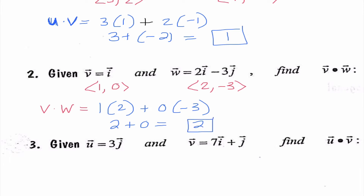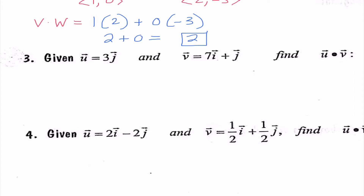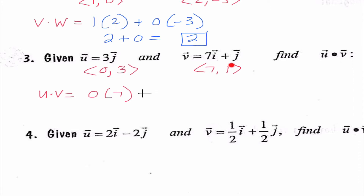Hopefully we're seeing this is pretty straightforward — the key thing is memorizing the formula. Number 3: vector u is (0, 3). Where did the 0 come from? It came from the fact that I don't have an i value, so it's like 0i. And then vector v is (7, 1). So if I'm finding the dot product of those two, I would do 0 times 7 plus 3 times 1. I get 0 + 3, which is 3.